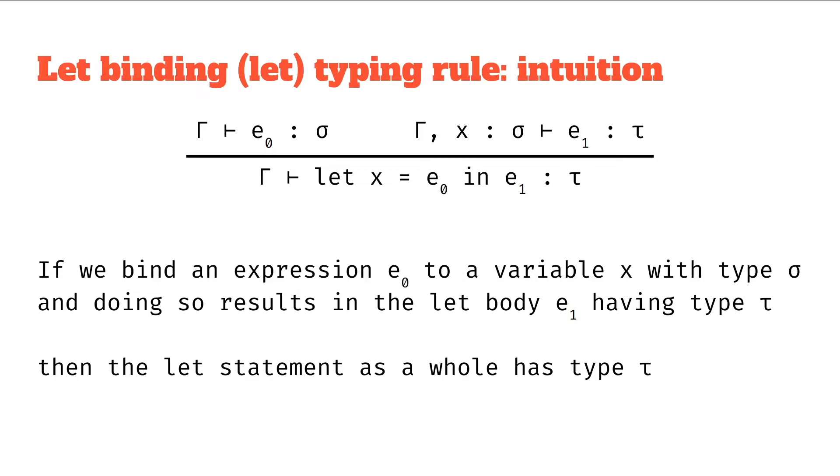And this is kind of similar to what we saw for function abstraction or function application, kind of both in one really, because the x equals E0 in E1 - the x equals E0 is kind of like the argument into the function, and the x in E1 is like a parameter and function body for function abstraction. So thinking about those two rules, application and abstraction, this is kind of the mix of those two.